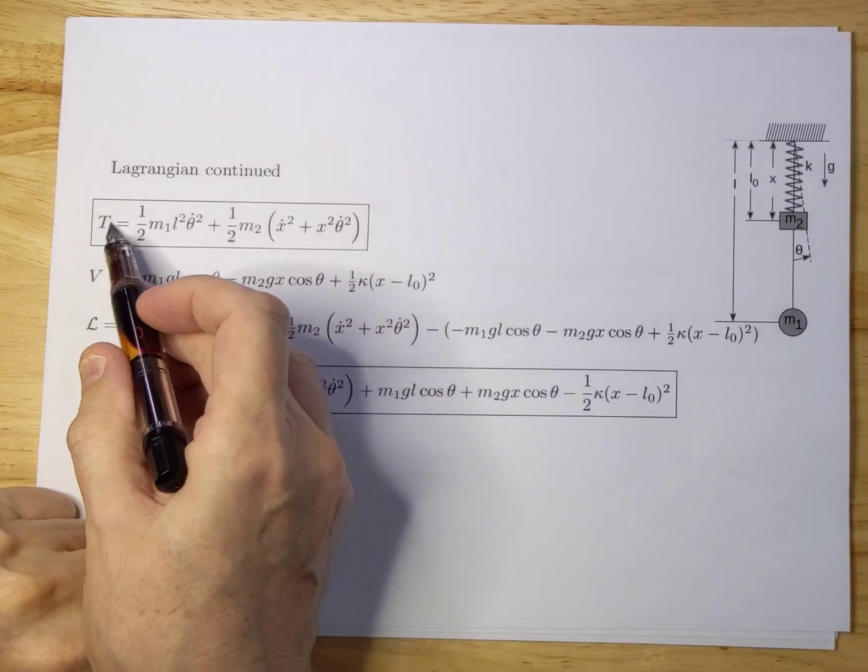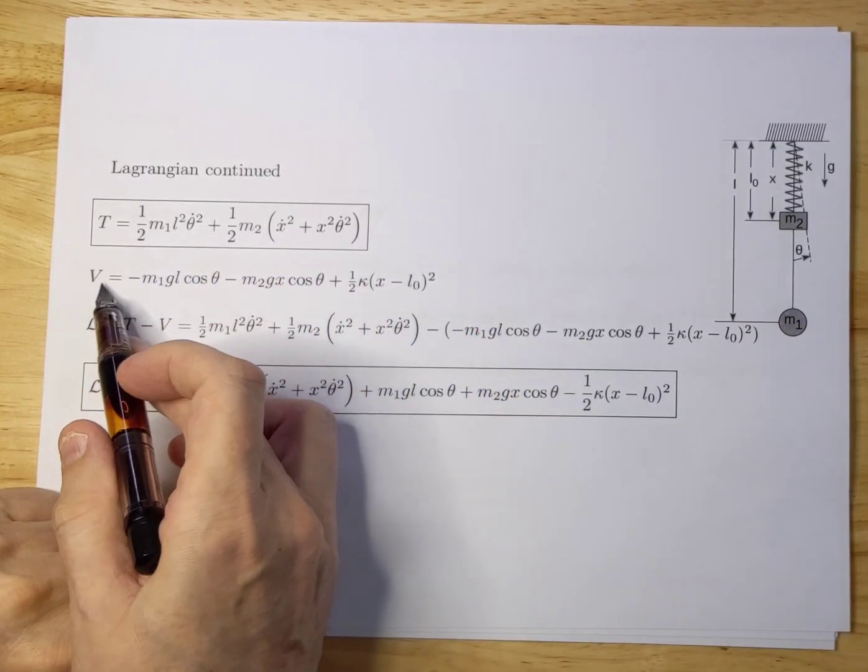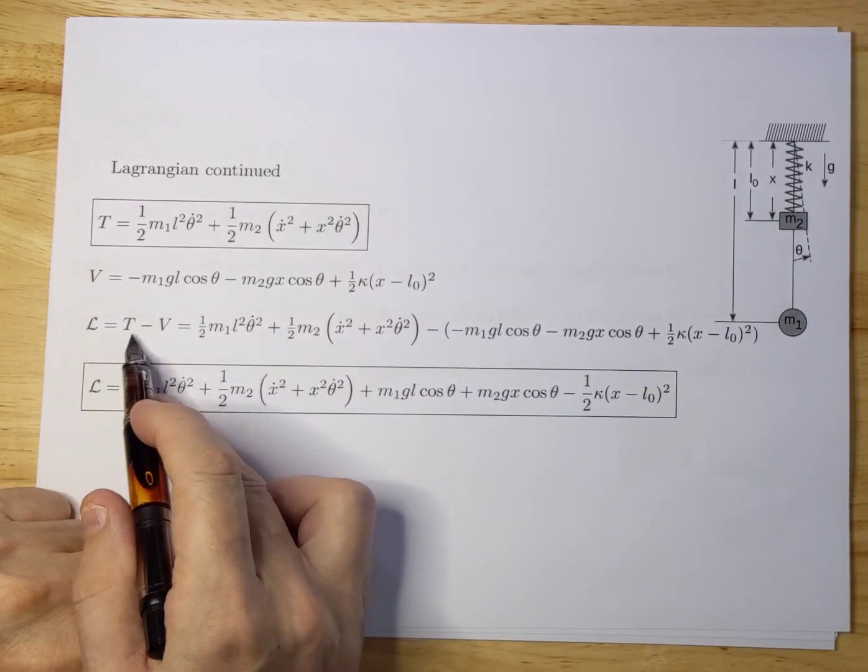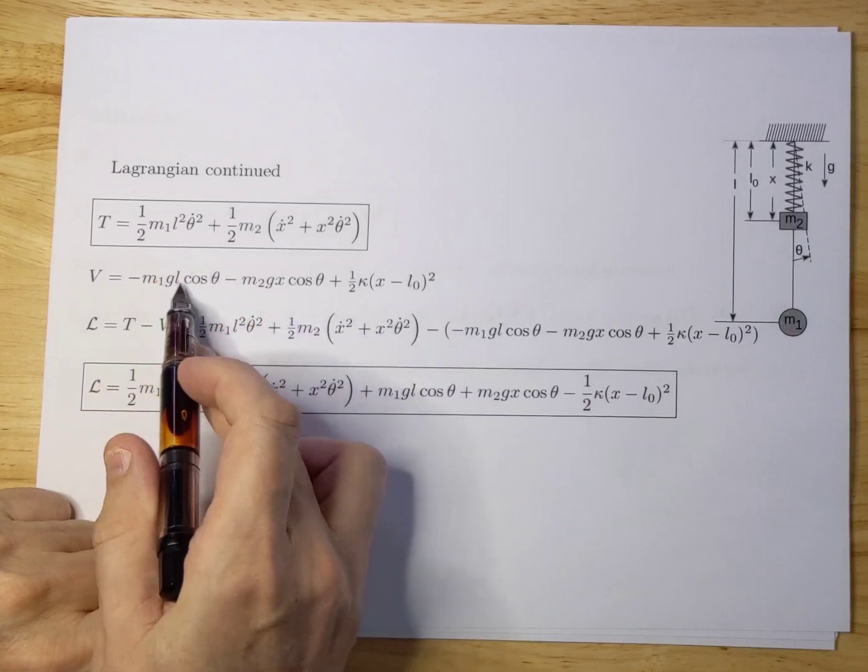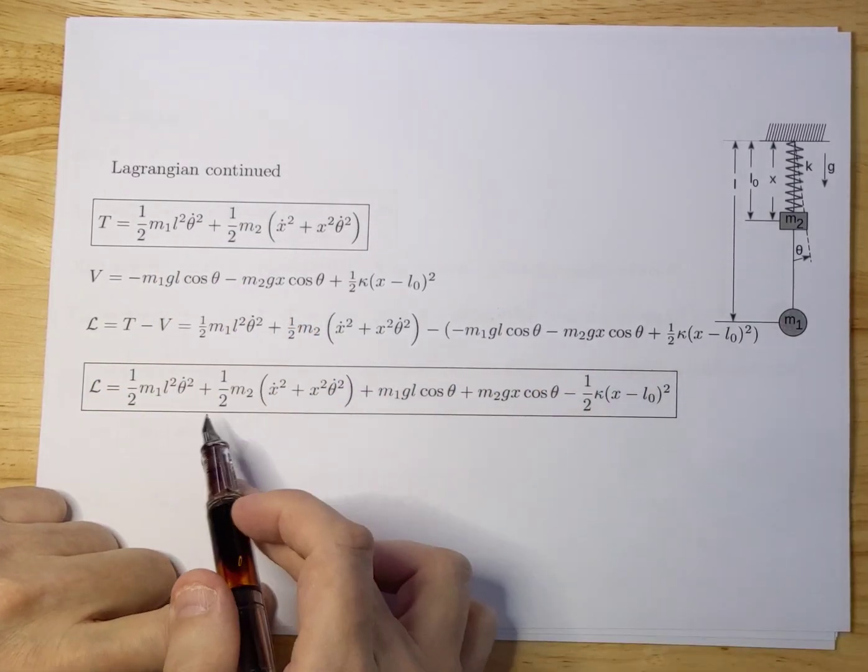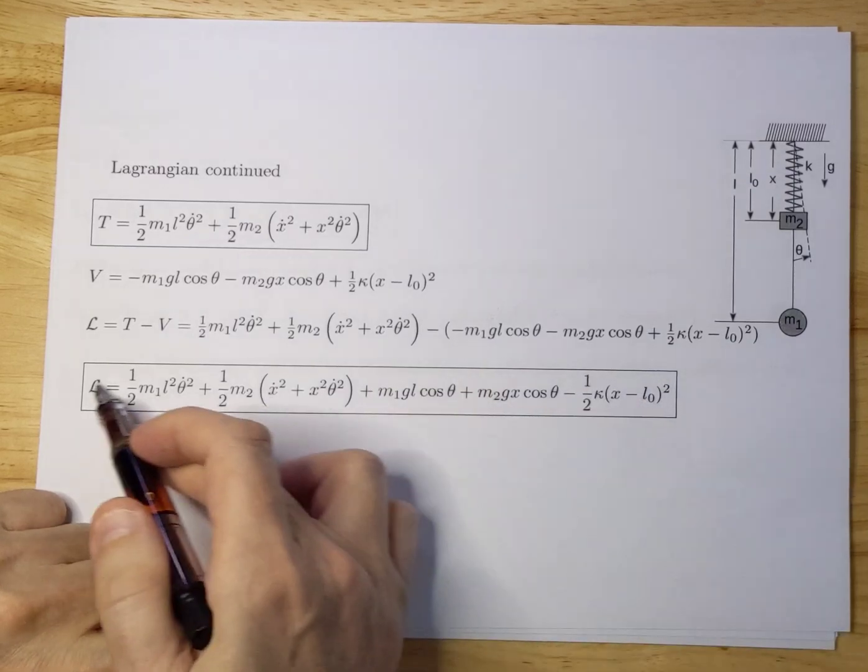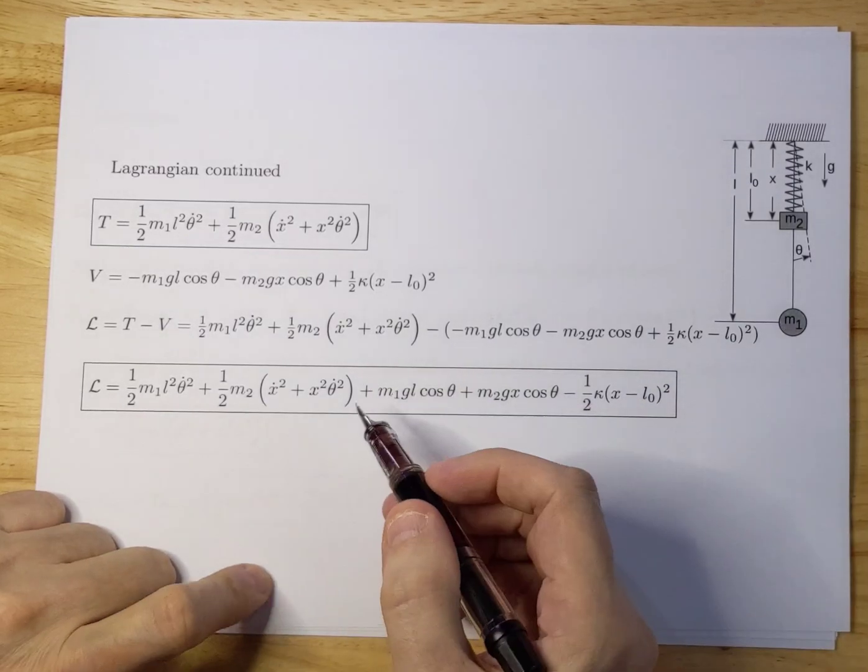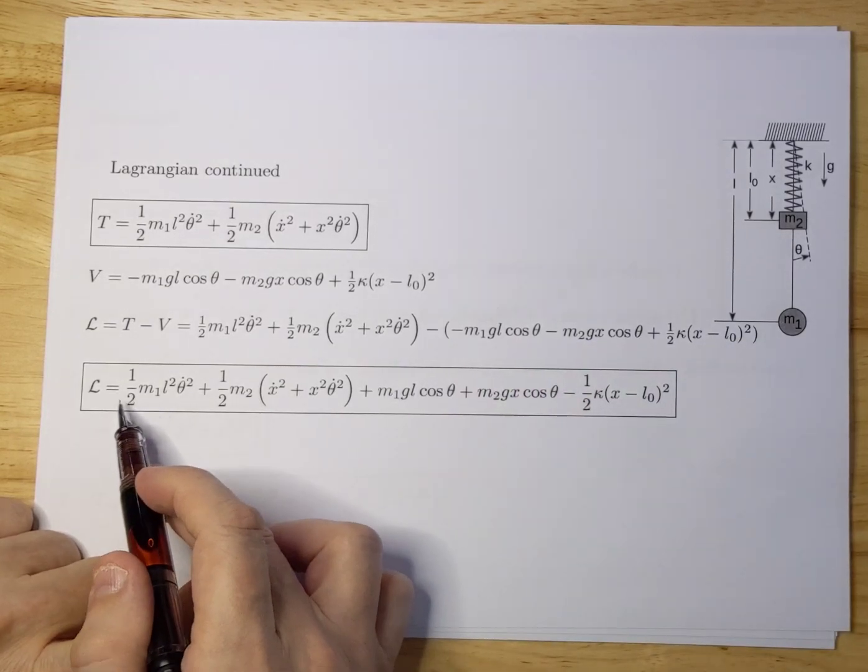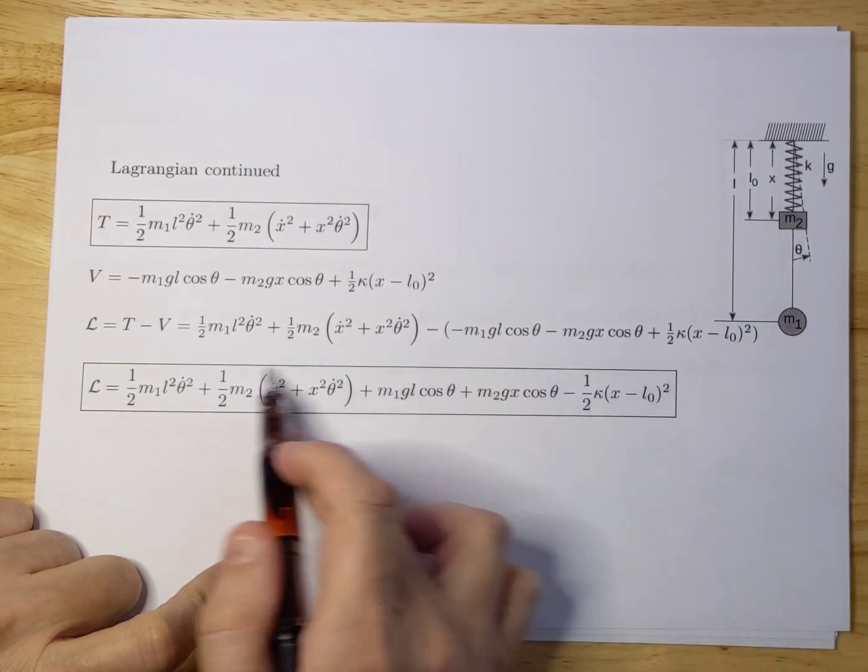Now we have our T, the kinetic energy terms, and the potential energy terms. You can subtract them. Your Lagrangian is now T minus V, you subtract this one from this one and you get this. You work it out and you get this. It's very straightforward, just a little algebra. There's nothing hard or intricate about this.